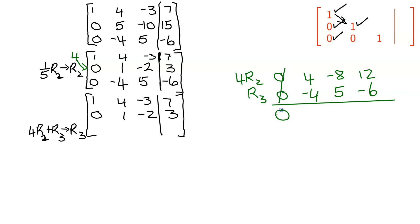My first element is still a 0. 4 minus 4, that gives me the 0 I'm aiming for. Negative 8 plus 5 is negative 3, and 12 minus 6 is 6. So my new row 3 is 0, 0, negative 3, and 6. So I've got that 0.